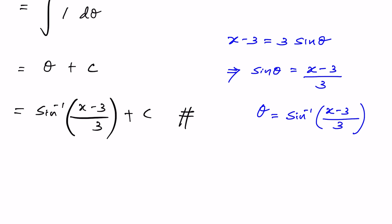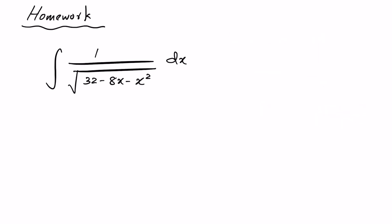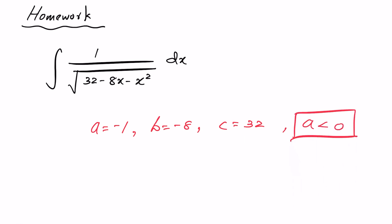For a homework problem, evaluate the integral 1 over square root of (32 − 8x − x²) dx. Here a = −1, b = −8, and c = 32, so a is clearly negative. Now compute delta = b² − 4ac = (−8)² − 4(−1)(32) = 64 + 128.